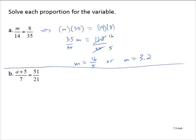Exercise B, we have a plus 5 over 7 is equal to 51 over 21. Using cross products, we would have a plus 5 multiplied by 21 is equal to 7 multiplied by 51.